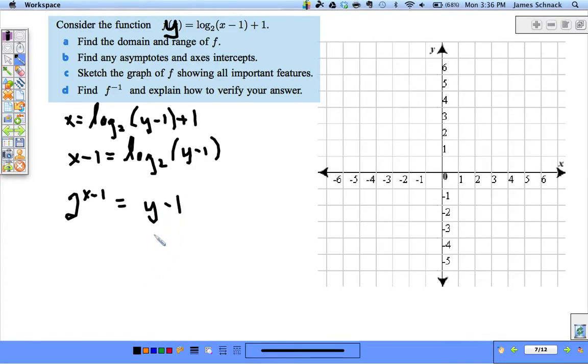And then adding 1 to both sides, we get the inverse equation is equal to 2 to the X minus 1 plus 1. So it's an exponential problem. This is easy enough to graph.